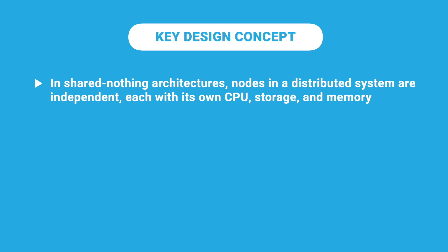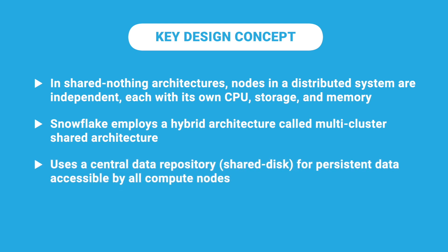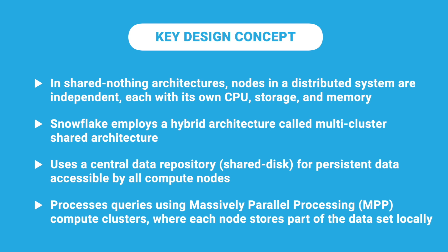The key concept to understand about Snowflake is its hybrid approach to design. Typically, most databases use a shared nothing architecture — in a distributed system, each node does not share any components with the others; it has its own CPU, storage, and memory. Snowflake took a more hybrid approach called a multi-cluster shared architecture. They have a shared disk component using a central data repository for persisted data accessible from all compute nodes, but similar to shared nothing, Snowflake processes queries using MPP — Massively Parallel Processing — compute clusters, where each node stores a portion of the data set locally. This offers data management simplicity of shared disk while balancing the performance and scale-out benefits of shared nothing.